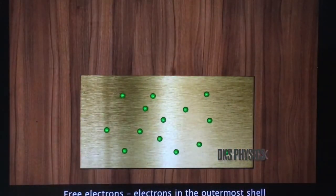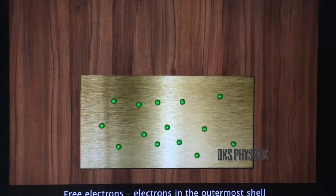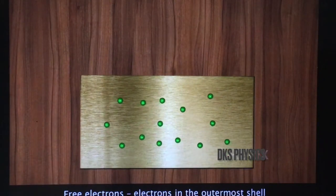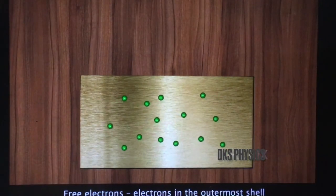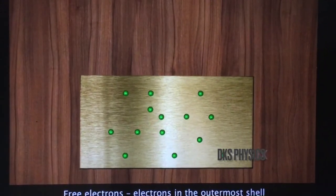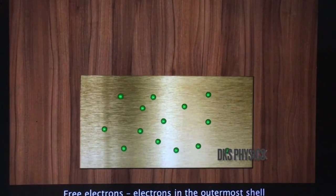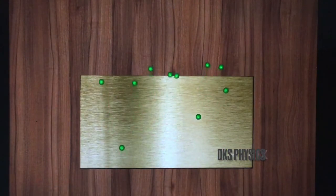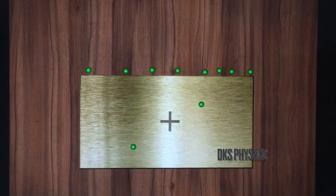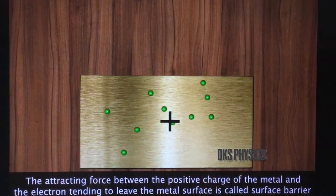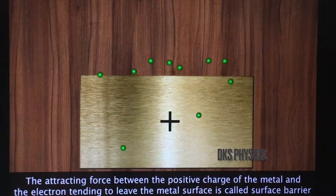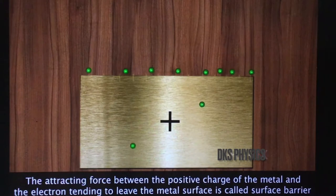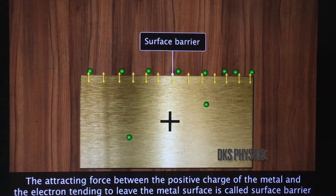In metals, electrons in the outermost orbit are loosely bound and move freely in all directions. These electrons are called free electrons. When these free electrons tend to leave the metal surface, a positive charge is developed on the surface. The positive charge pulls the electron leaving the metal surface. This attracting force is called surface barrier.